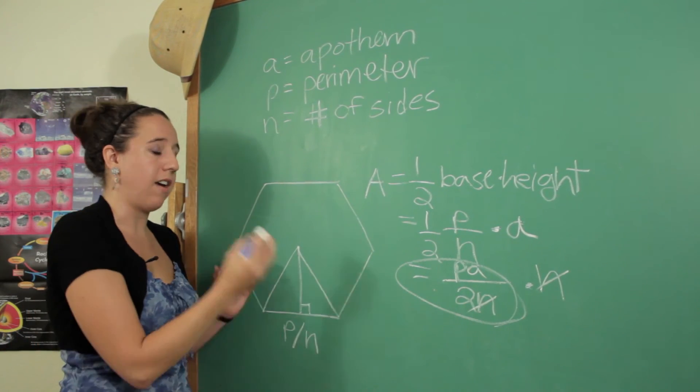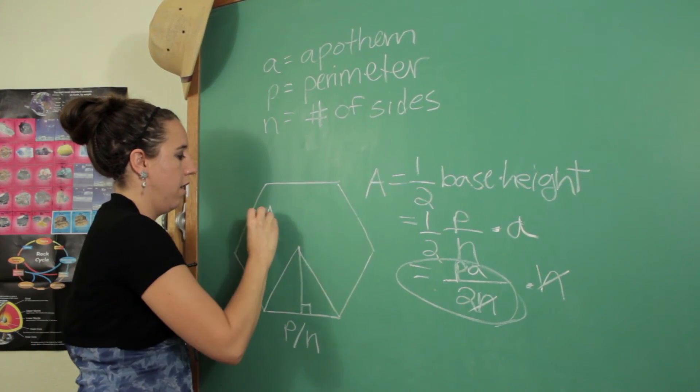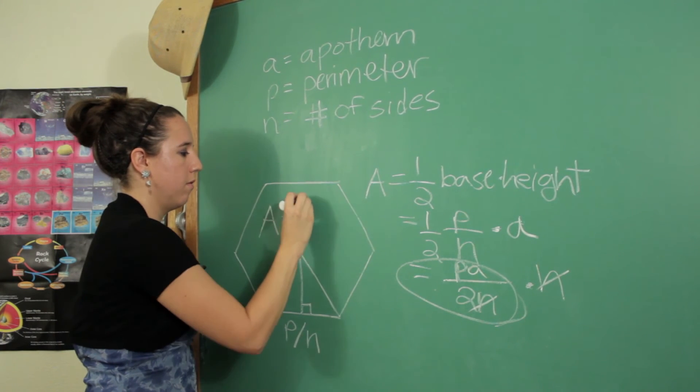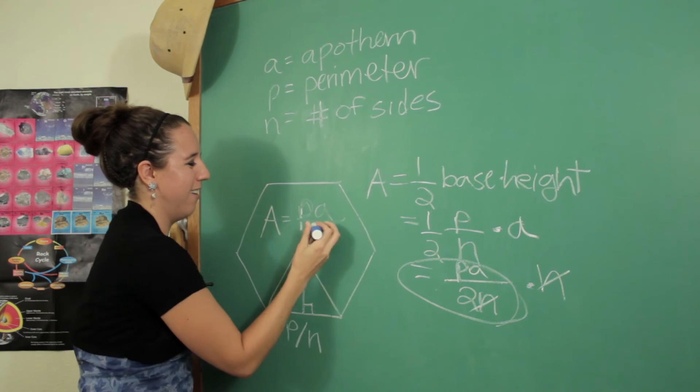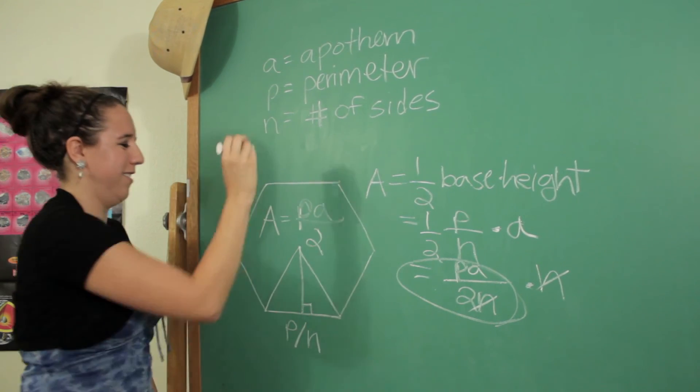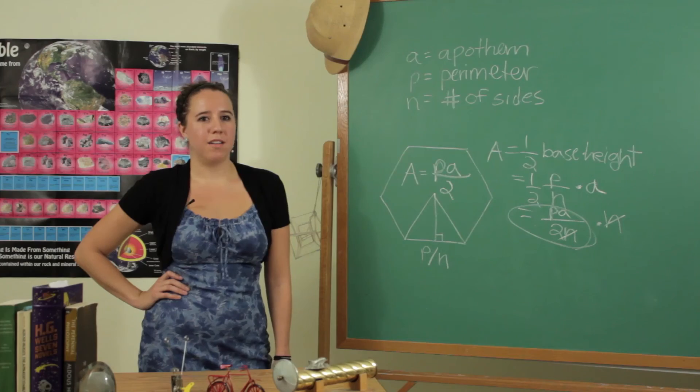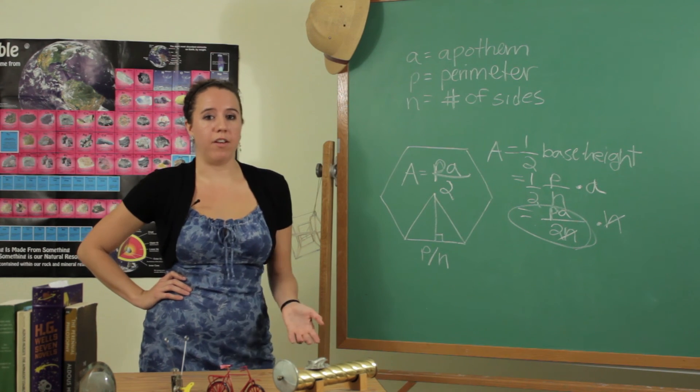So the area of the entire polygon is going to be P times a over 2. So that was pretty simple because our apothem was given.